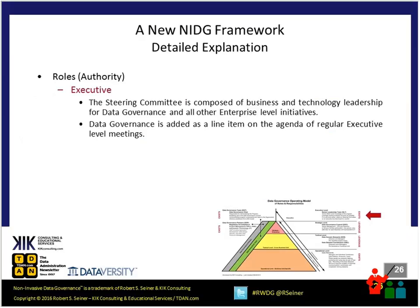Starting at the top, the executive level — typically called the steering committee — is composed of both business and technology leadership, not only for data governance but for all enterprise-level initiatives. Oftentimes the steering committee might already exist within your organization, and you don't need to create another group. The diagram notes 'exists' next to the executive level because within your organization there might already be something you can take advantage of.